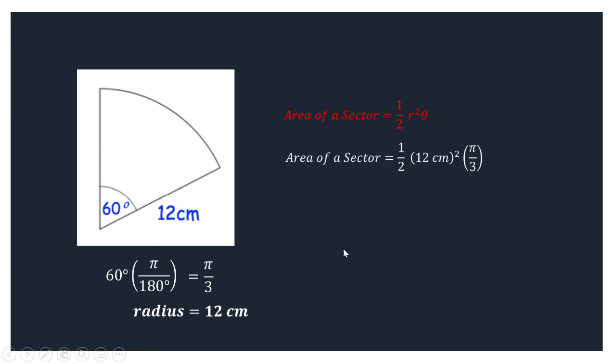So substituting the values, we can have 1 half times the square of 12 centimeters times pi over 3. Simplifying, we can have 144 square centimeters. And then 1 half times pi over 3 would be pi over 6. 144 divided by 6 would be 24. And then that would be 24 pi square centimeters. Or we can say that the area is approximately 75.40 square centimeters.